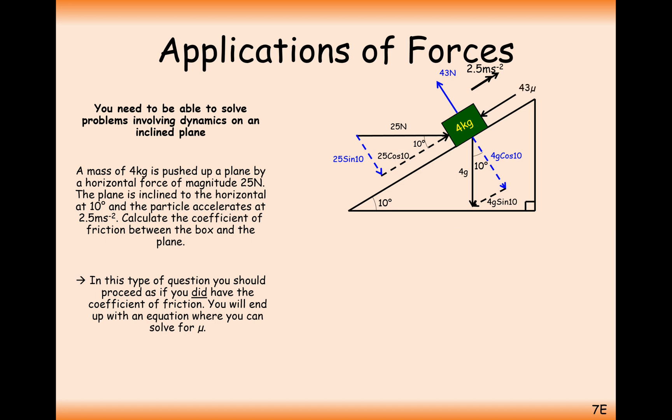Right, now we can do an F equals ma equation up the slope. It's being pushed up the slope. We're going to have the forces on one side of the equation, M and A on the other side of the equation. We know M, we know A, so we should be able to rearrange this to work out mu. So doing an F equals ma equation, resolving the forces up the slope, we have the forces in red here. We have 25 cos 10 up the slope, we have 4g sin 10 down the slope, and we have 43 mu down the slope, and we have an acceleration of 2.5 meters per second squared. So 25 cos 10 up the slope, that's a positive. 43 mu down the slope, that needs a negative sign in front of it. And 4g sin 10, that's going down the slope, so that needs a negative sign in front of it.